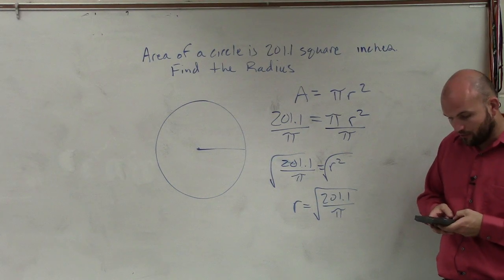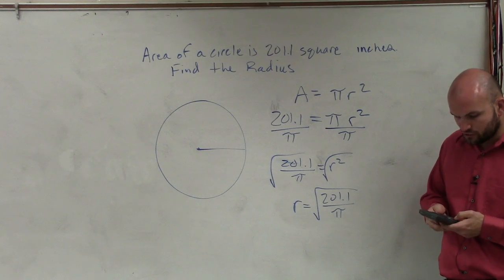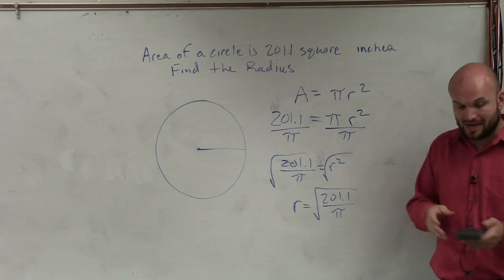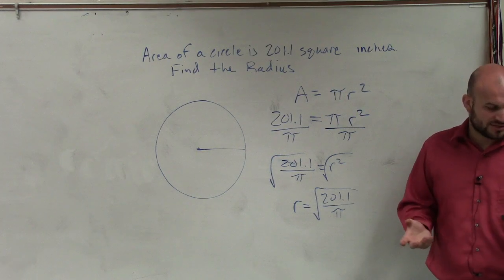So I have 201.1 divided by pi. Then I take the square root of the whole answer, not the rounded answer. And what I get is 8.0007.